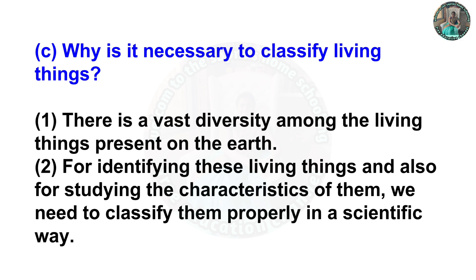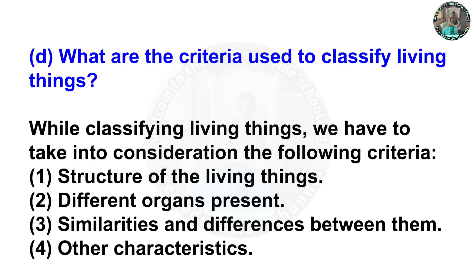Question C — why is it necessary to classify living things? There is vast diversity among the living things present on the earth. For identifying these living things and studying their characteristics, we need to classify them in a scientific way. Question D — what are the criteria used to classify living things? While classifying, we consider: first, structure of living things; second, different organs present; third, similarities and differences between them; fourth, other characteristics.